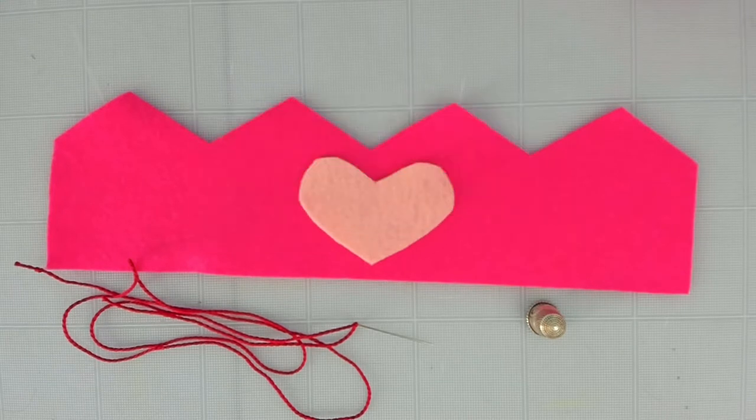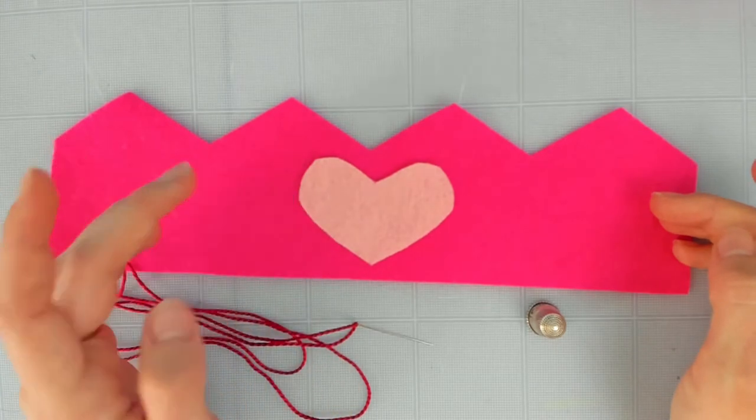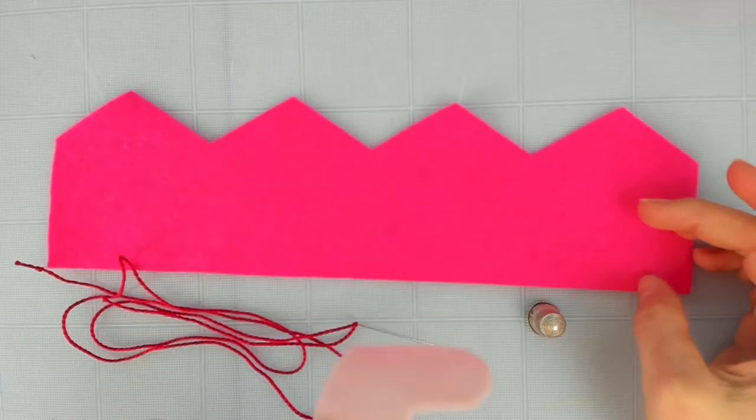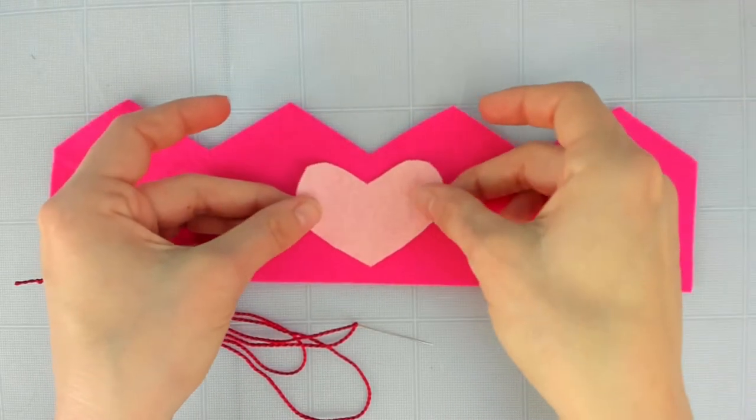Now blanket stitches are great ways to finish the edges of fabric, but they also make a really handy stitch when you're doing a bit of fancy applique work. Applique is when you are sewing one piece of fabric onto another. So in this example I have a little crown and this sweet little heart I want to put on it.